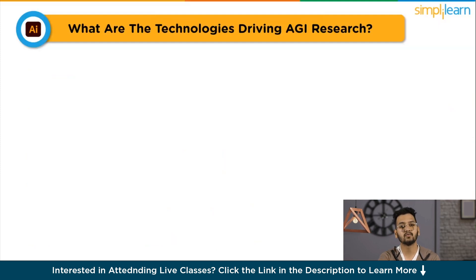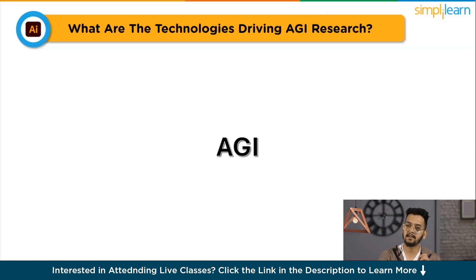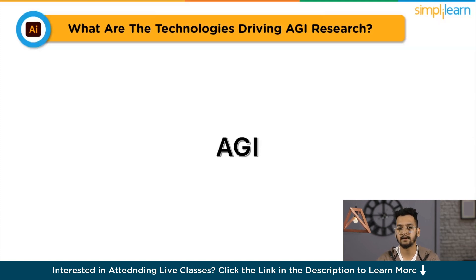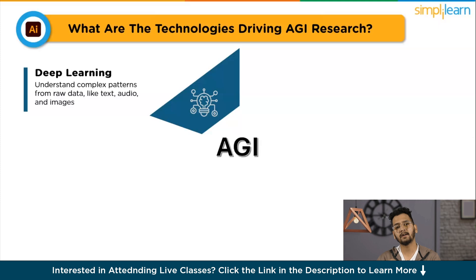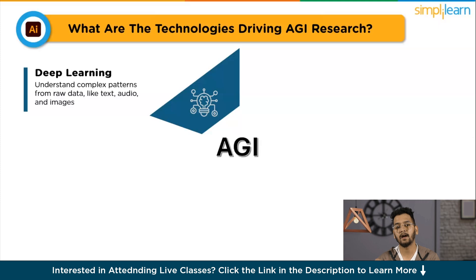What are the technologies driving Artificial General Intelligence research? Creating AGI is a challenging goal, but emerging technologies fuel ongoing efforts. The first is Deep Learning, which teaches computers to understand complex patterns from raw data like text, audio, and images. It's useful for creating smart systems — for example, Amazon SageMaker helps developers build deep learning models for things like the Internet of Things (IoT). The second is Generative AI, a subset of Deep Learning that lets machines produce realistic content based on what they have learned.